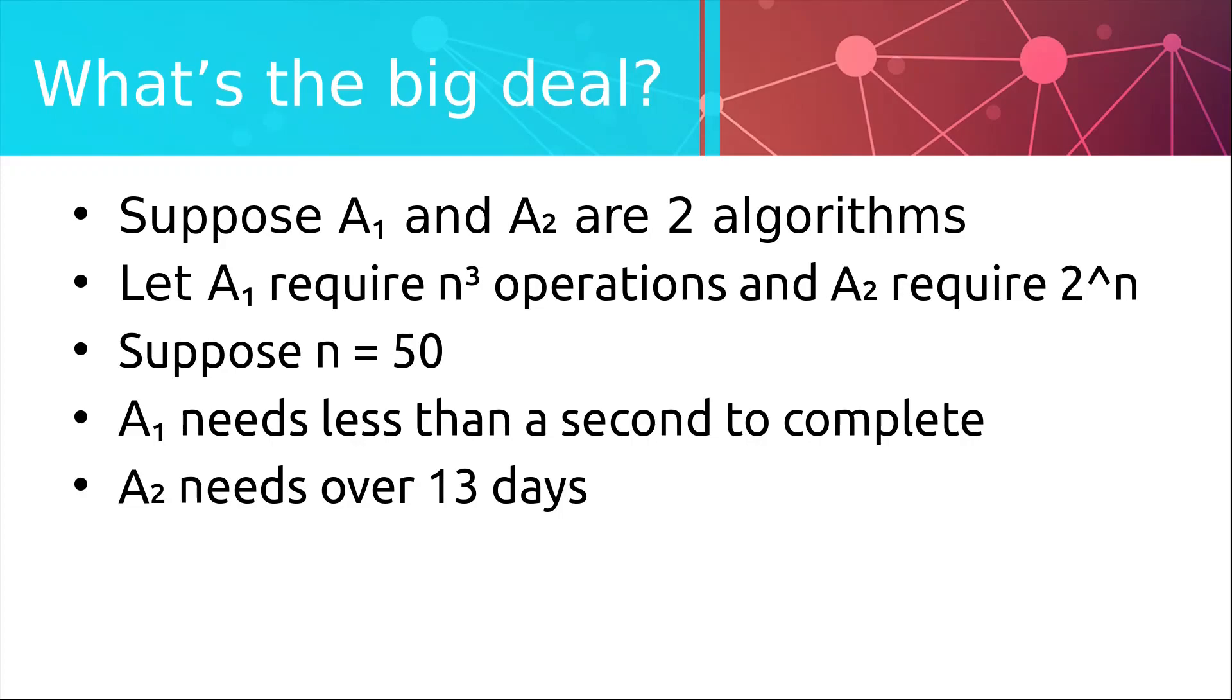Imagine if noodle problem was among those hard problems, and your mom had to wait 13 days for you to come home from the Walmart. You think that's crazy? Check this out. If we raise n to just 60, we still need under a second for A1, and A2 needs over 35 years to finish. But wait, that's not it. If n is equal 100, A1 still needs less than a second to complete, whereas A2 needs over 40 trillion years. So this would take longer than the universe has existed or will ever exist, probably.